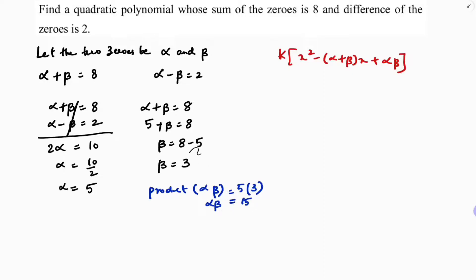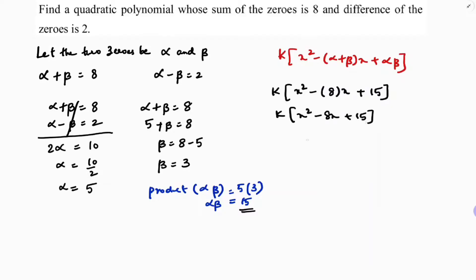Substituting alpha plus beta and alpha into beta into the formula: k into x square minus alpha plus beta, which is 8x, plus alpha into beta, which is 15. So the polynomial is k into x square minus 8x plus 15. At k equals 1, the answer is x square minus 8x plus 15.